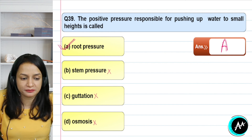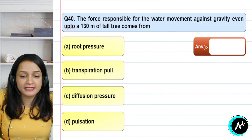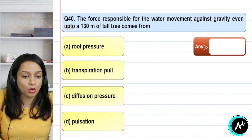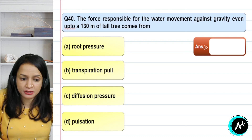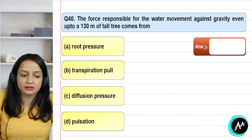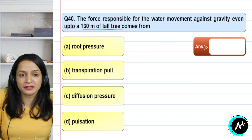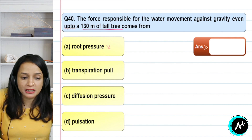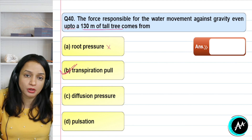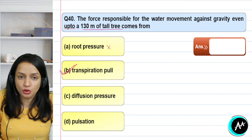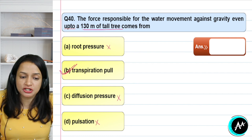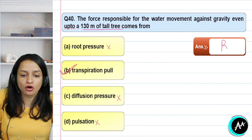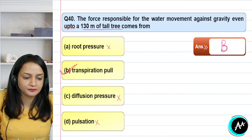Question 40: the force responsible for water movement against gravity even up to 130 meters in a tall tree comes from what? A strong force is needed to push water to a great height. Options are root pressure, transpiration pull, diffusion pressure, or pulsation. Root pressure is sufficient only for small-height plants. For a tall tree, transpiration pull must be very strong — the stronger the transpiration pull, the more strongly water is drawn up. Diffusion pressure and pulsation have no role in water transport. The correct answer for question 40 is option B — transpiration pull.